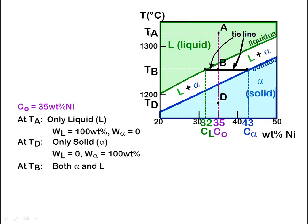At temperature Ta with 35 weight percent nickel, drawing a horizontal line from Ta intersects the vertical line at a point in the fully liquid region — so liquid percent is 100% and solid percent is 0%. At temperature Td, the horizontal line intersects in the fully solid region — solid weight percent is 100% and liquid is 0%.